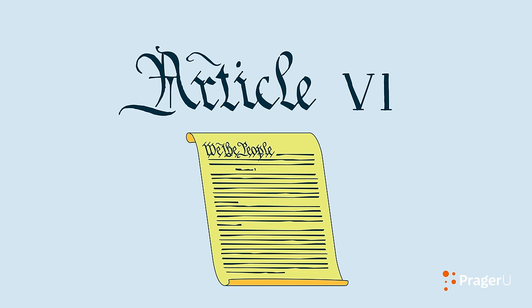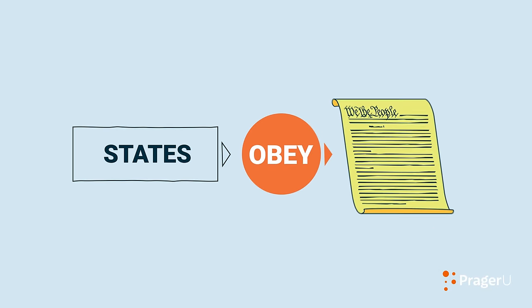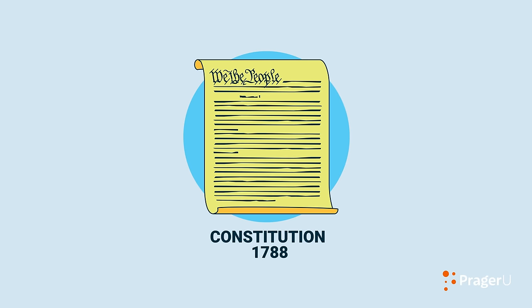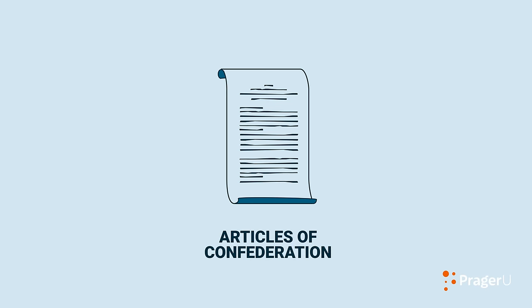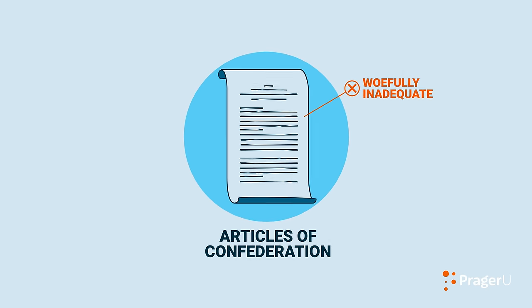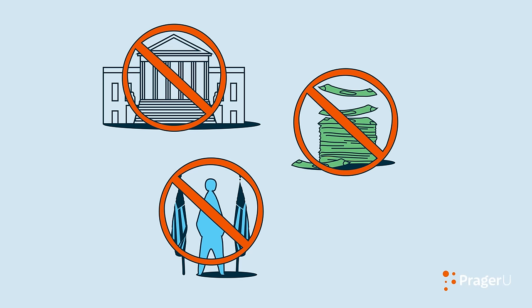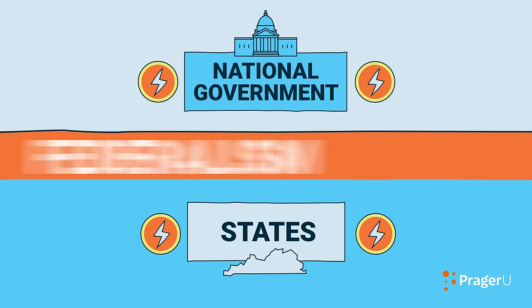Article 6 ensures that the Constitution is the supreme law of the land. In other words, every state must obey the Constitution and the laws of the federal government. Before the Constitution was ratified in 1788, the new nation was organized under what were called the Articles of Confederation. But this governing document proved woefully inadequate — it had no chief executive, no federal court system, and no ability to collect taxes to support the national defense. The new Constitution addressed all these problems, but it did so in a way that preserved the power of the states to control matters of local concern. This division of power between the national government and the states is called federalism.